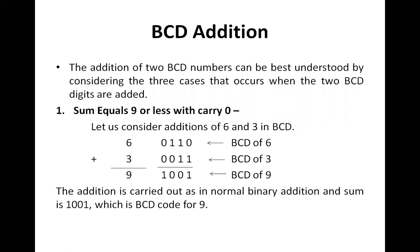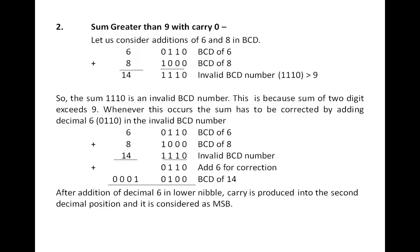This is a case of normal binary addition where we get a sum 1001 which is the BCD code for nine. This is the clear-cut case when adding two BCD numbers and getting a sum which is either nine or less than nine.